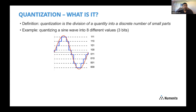What is quantization? The dictionary definition is the division of some quantity into a discrete number of small parts. You can think about this example of a sine wave, taken from Wikipedia. It has lots of real-valued numbers, and you could imagine quantizing it into eight different values, as shown here. The red line is the full precision real representation, and the blue staircase shows it quantized into eight values. Since there are eight values, you can index using three bits, so every point in the sine wave can be represented as a three-bit quantity.